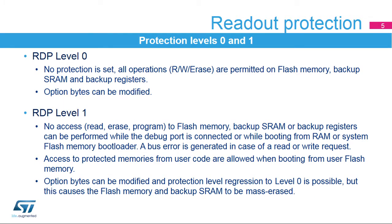When the lowest RDP level, level 0, is set, the device has no protection. All read or write operations, if no write protection is set, on the flash memory, the backup RAM, and the backup registers are possible in all boot configurations: flash user boot, debug, or boot from RAM. Option bytes are also changeable in this level.